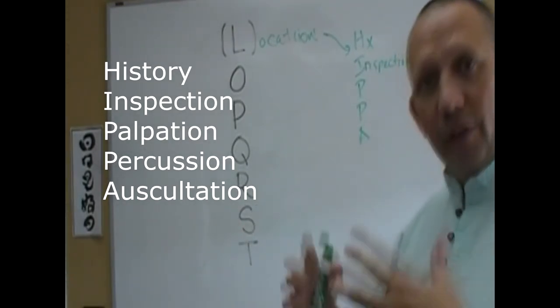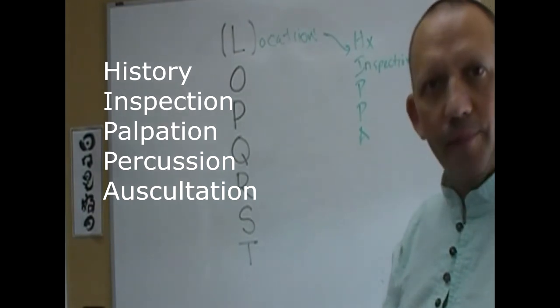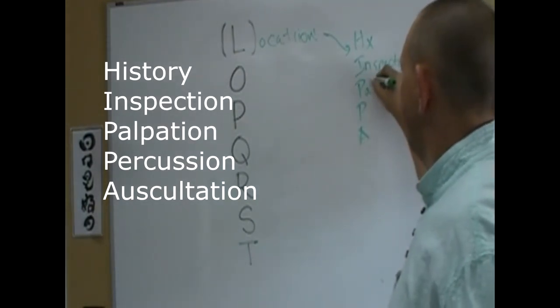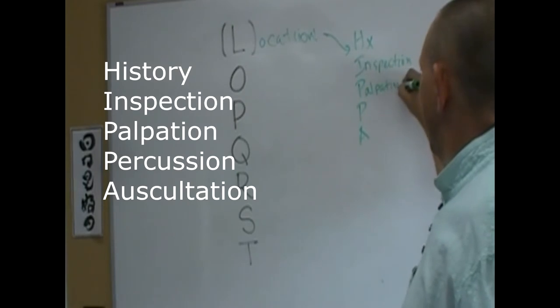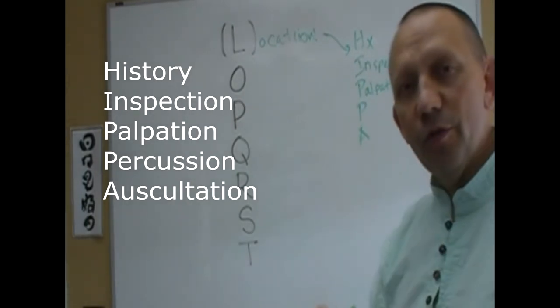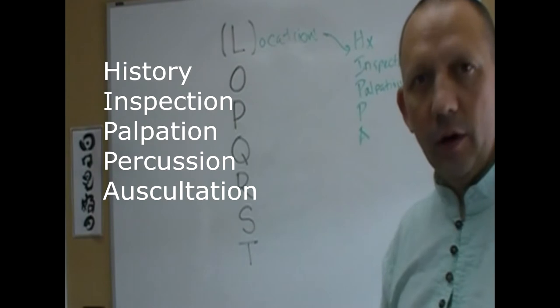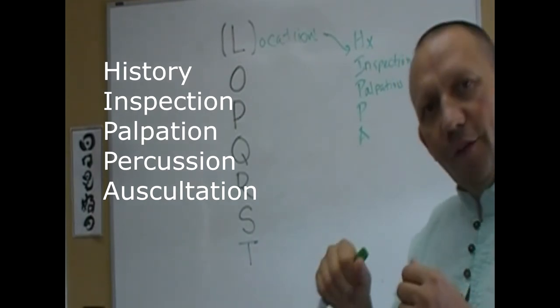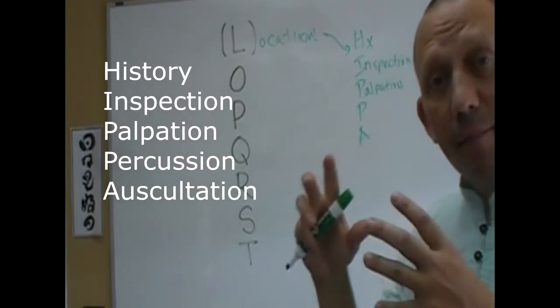Next is palpation, which is hands-on. You get your fingers in there and find where the ropey bits are. If you're looking at a muscle, find where the tightest part of that muscle is, in the belly or in the sides of the muscle.